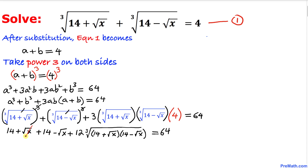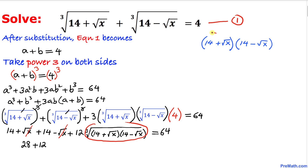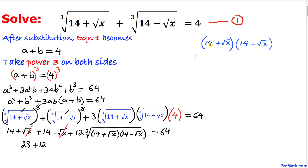The positive square root of x and negative square root of x cancel, so we get 14 plus 14 is 28, plus 12. Now let's focus on the radical part — the cube root. We can see that the expression inside represents a product of a sum and a difference.